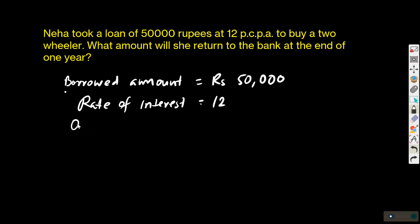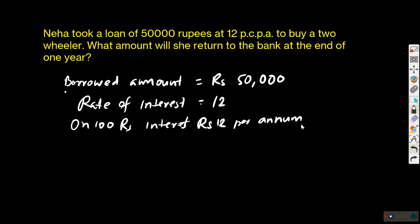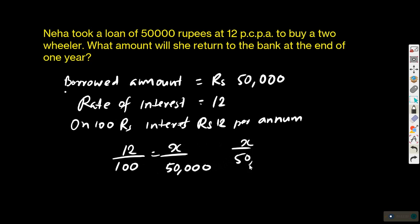Using the concept of proportion: 12 rupees interest per 100 rupees, so X rupees will be the interest for 50,000. We can write X upon 50,000 equals 12 upon 100. To find X, multiply both sides by 50,000. So X upon 50,000 into 50,000 equals 12 upon 100 into 50,000.